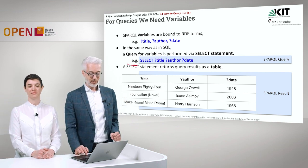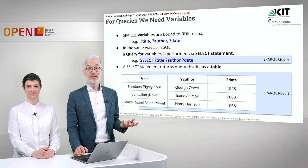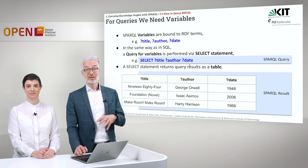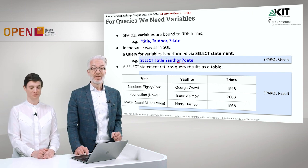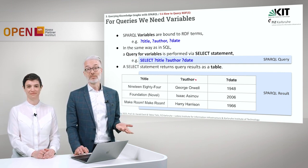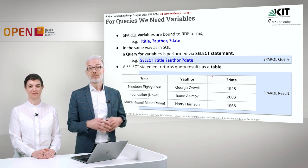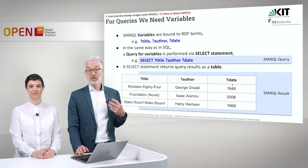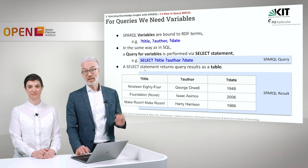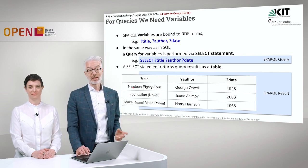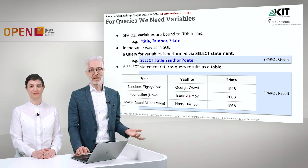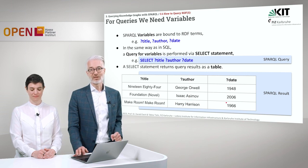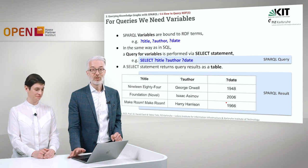The result of a SELECT statement is a table — the same as you are used to for SQL queries. The table has as columns exactly the variables you listed: title, author, and date. If we queried all content of the books in our example, we would have 1984, Foundation, and Make Room, Make Room as titles; George Orwell, Isaac Asimov, and Harry Harrison as authors; and the corresponding release dates.